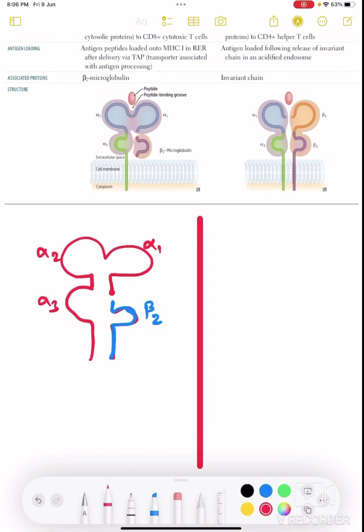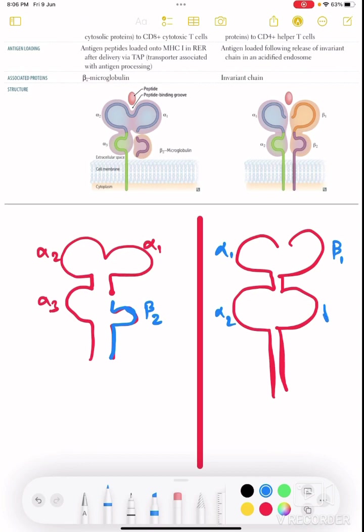Whereas MHC class 2 is made up of two chains again, but they are of equal size as we can see over here. So it also has two components: Alpha 1, Alpha 2, and Beta 1, Beta 2.